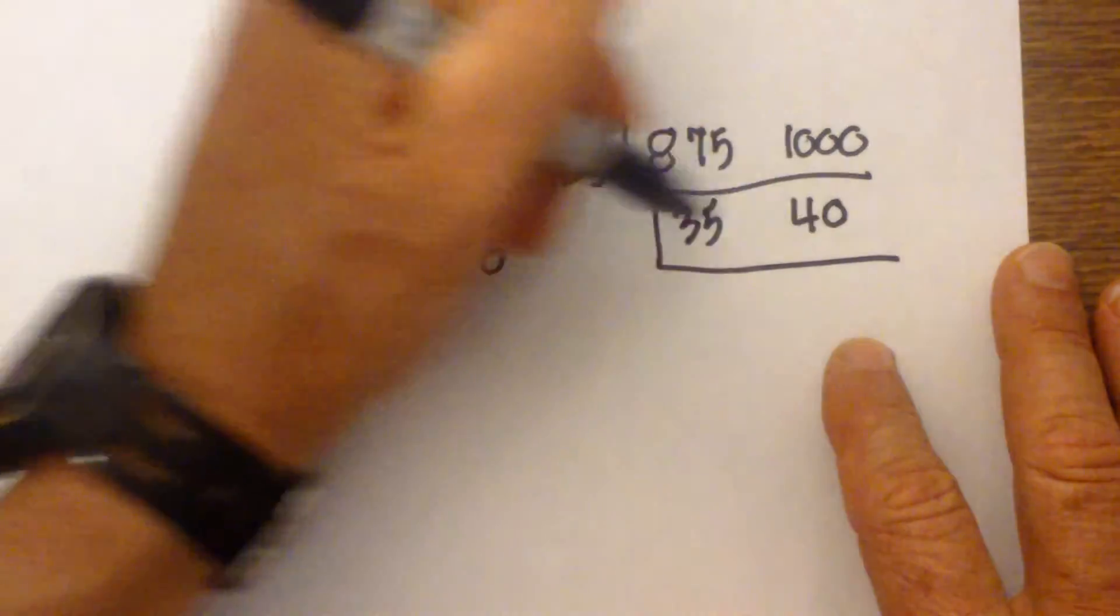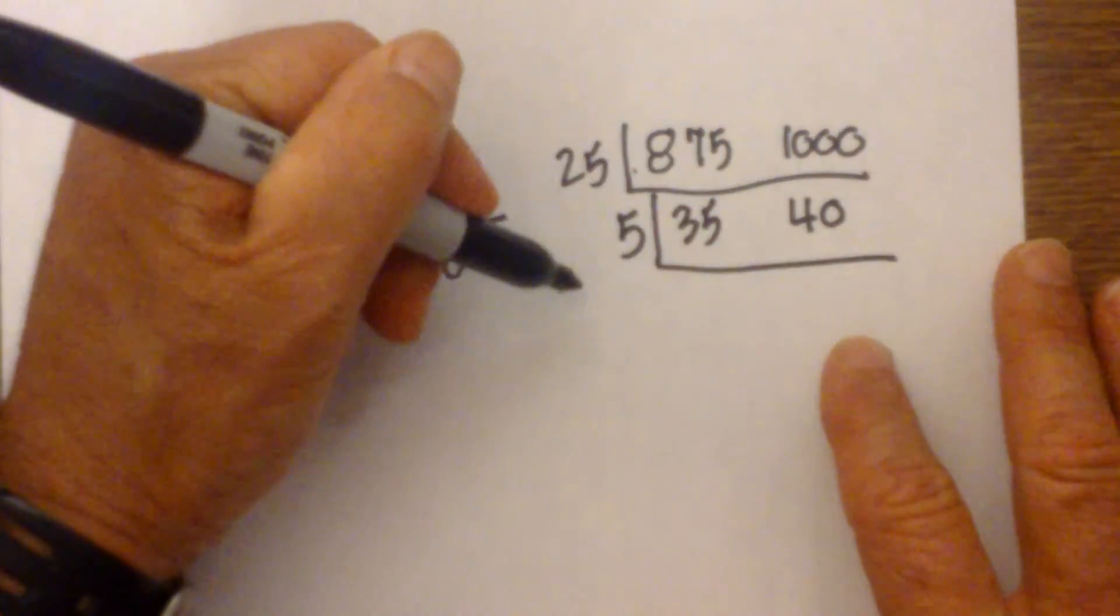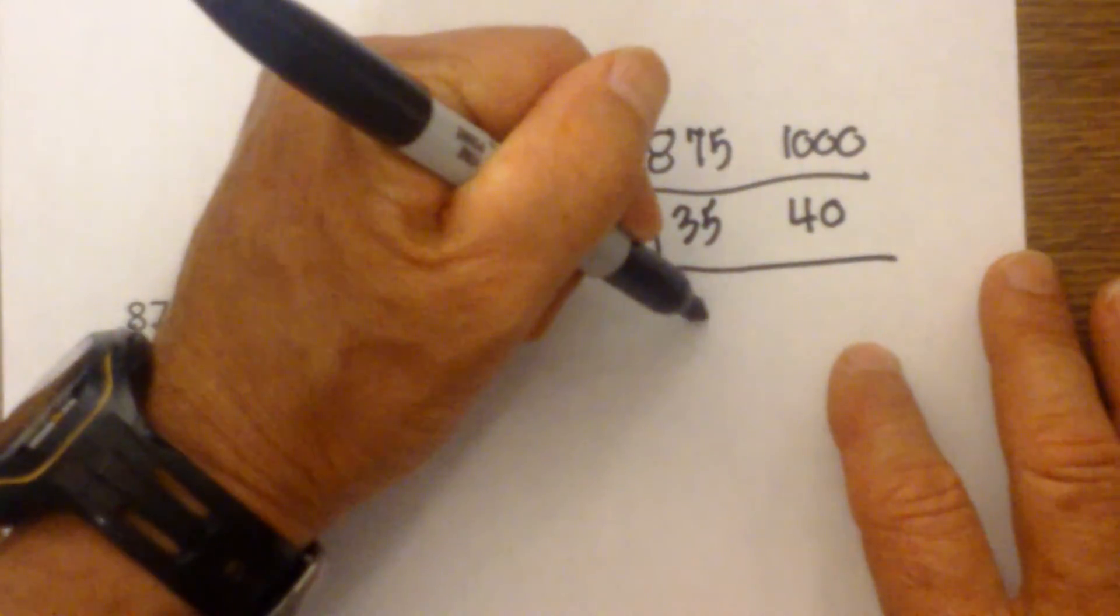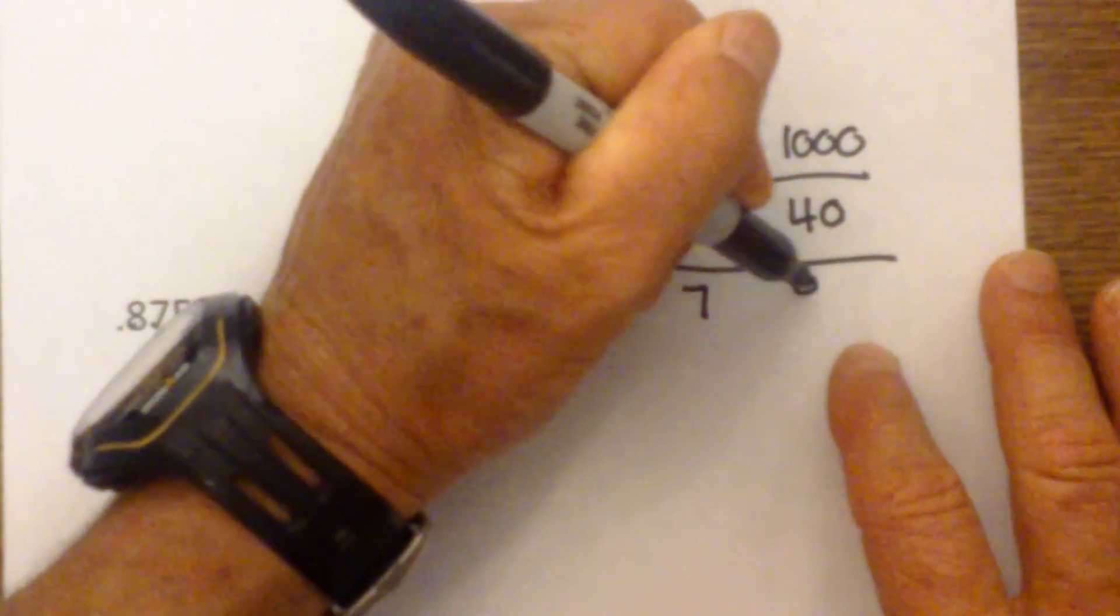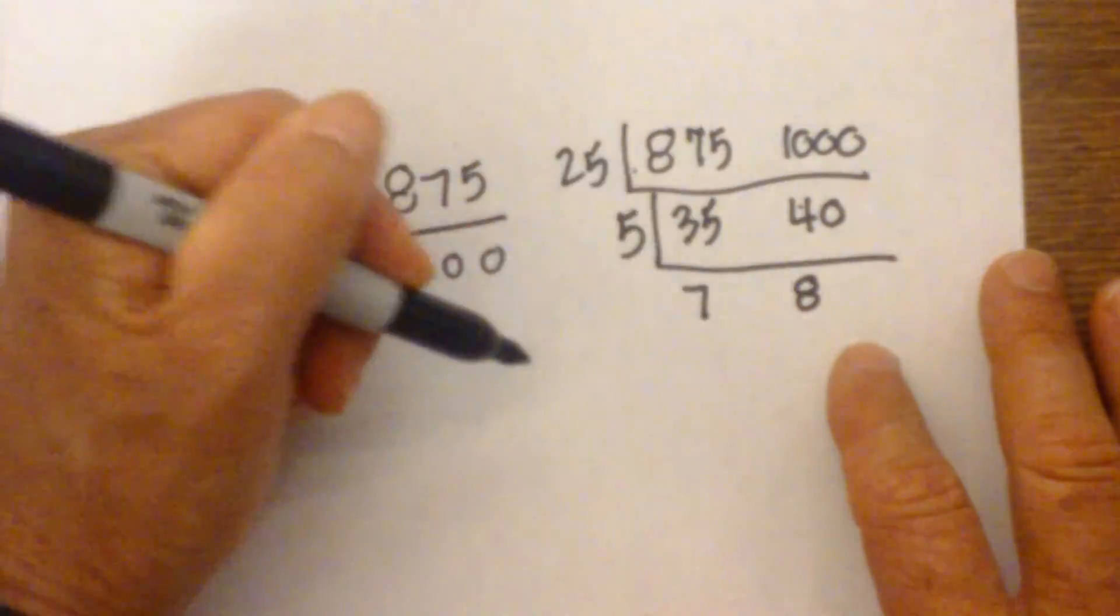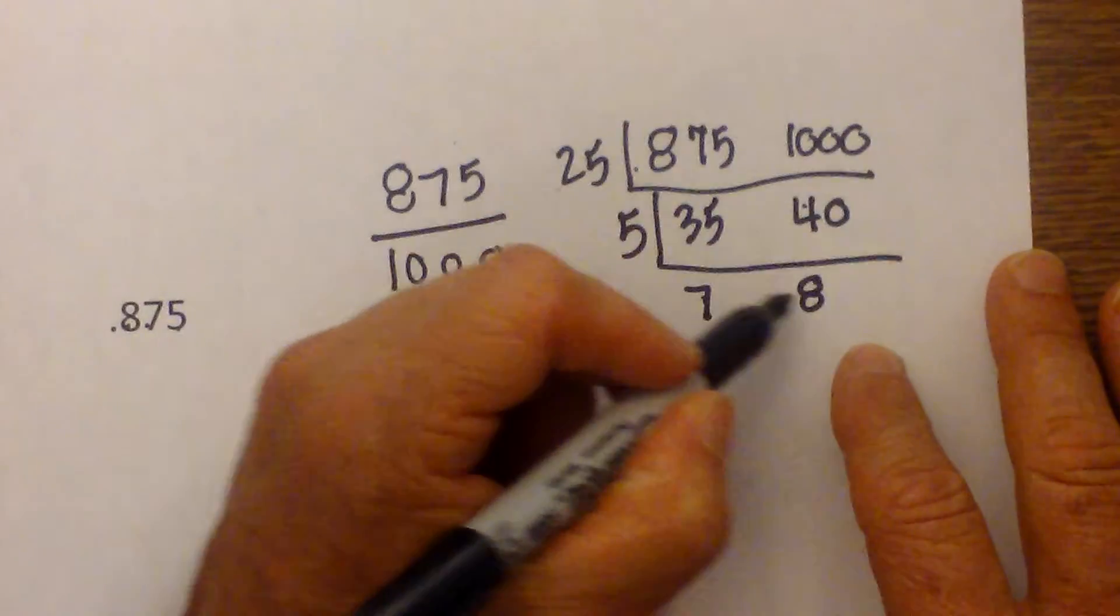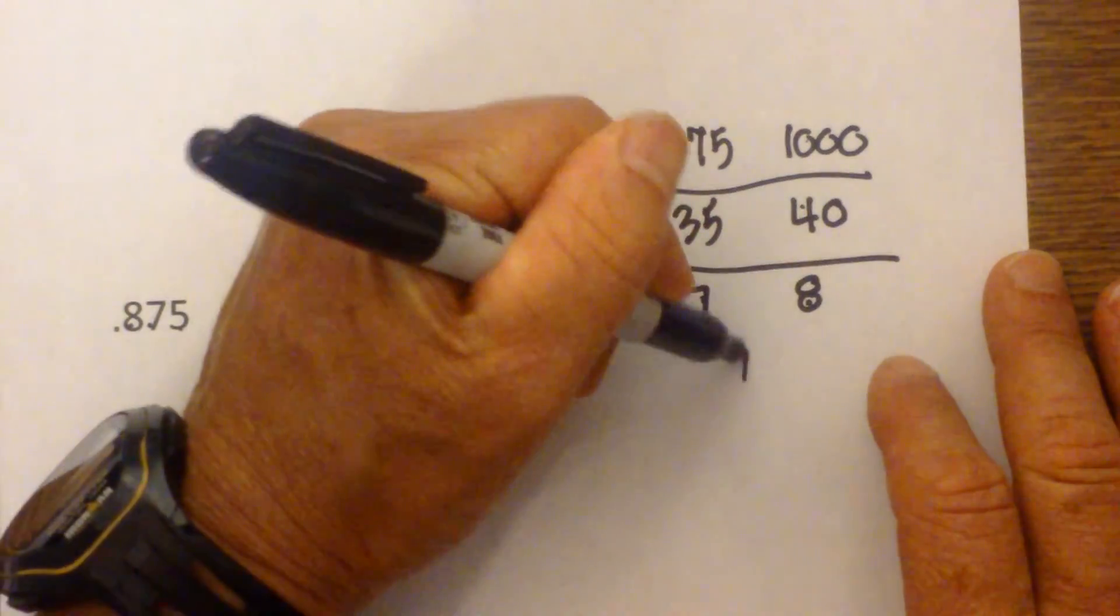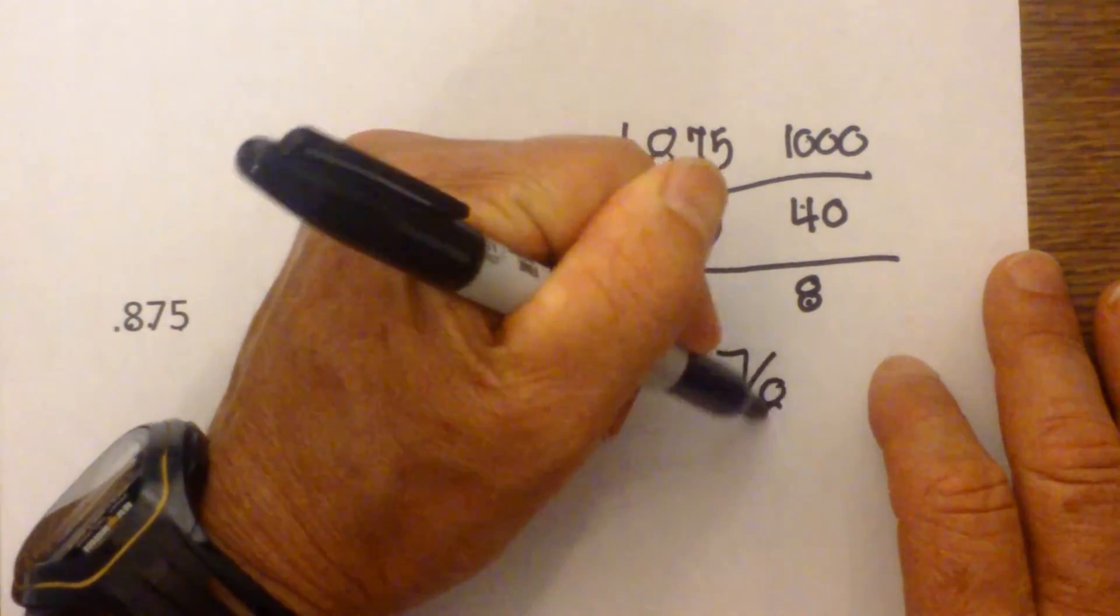Now I know that five will go into both of these. Five goes into 35 seven. Five goes into 40 eight times. This is prime. Prime will not divide into this number. So it is seven eighths.